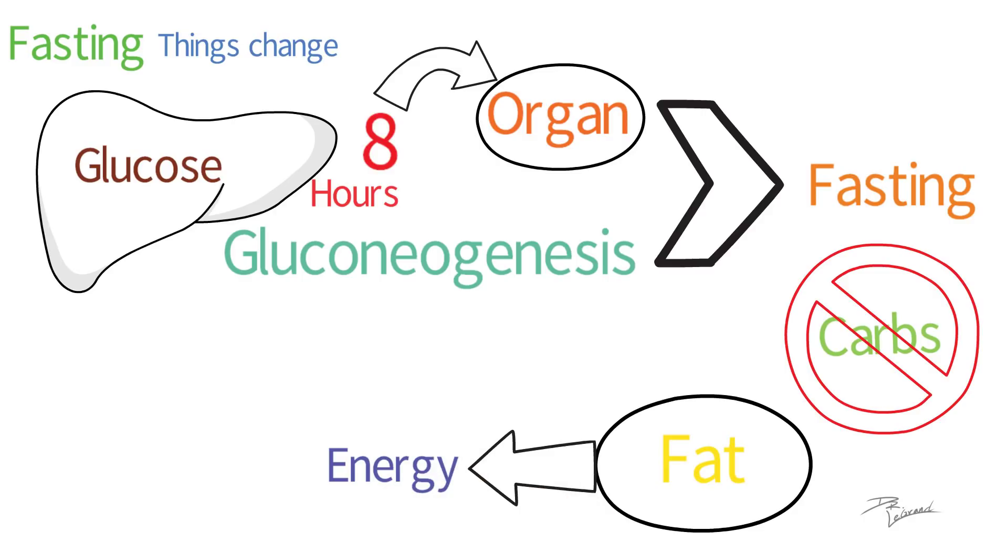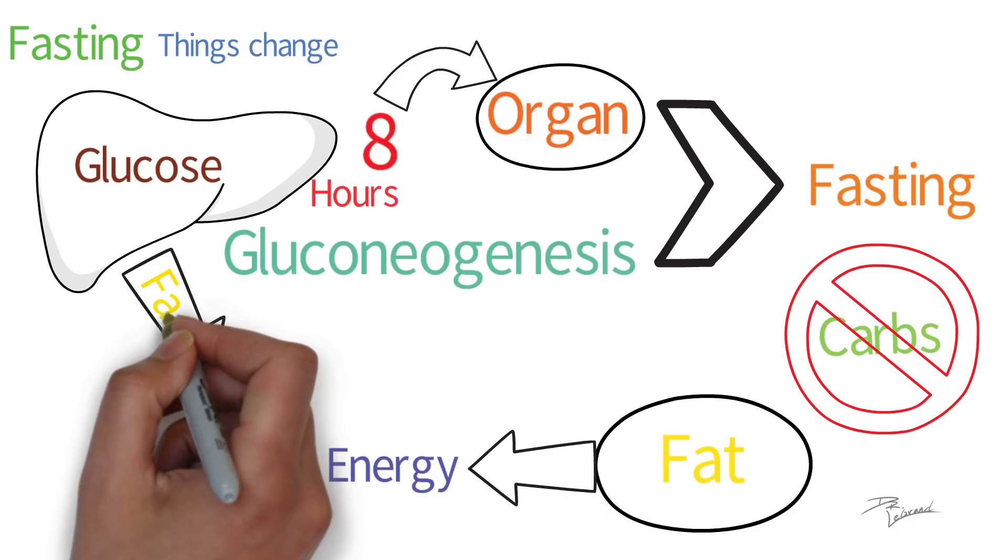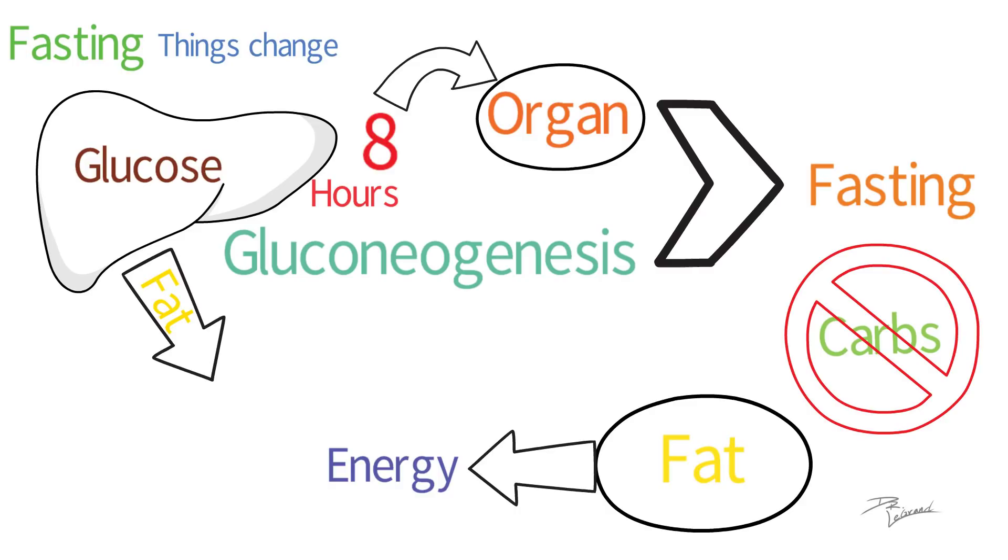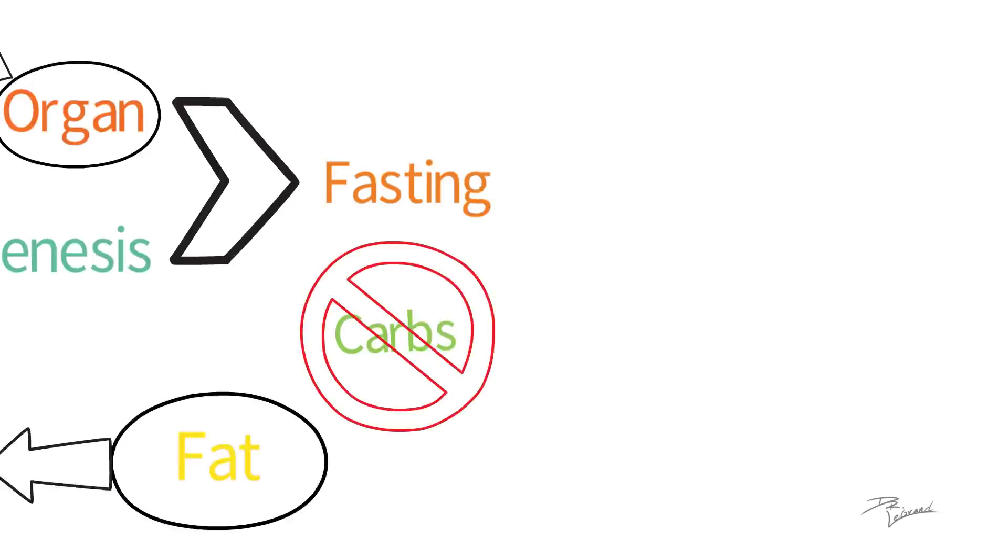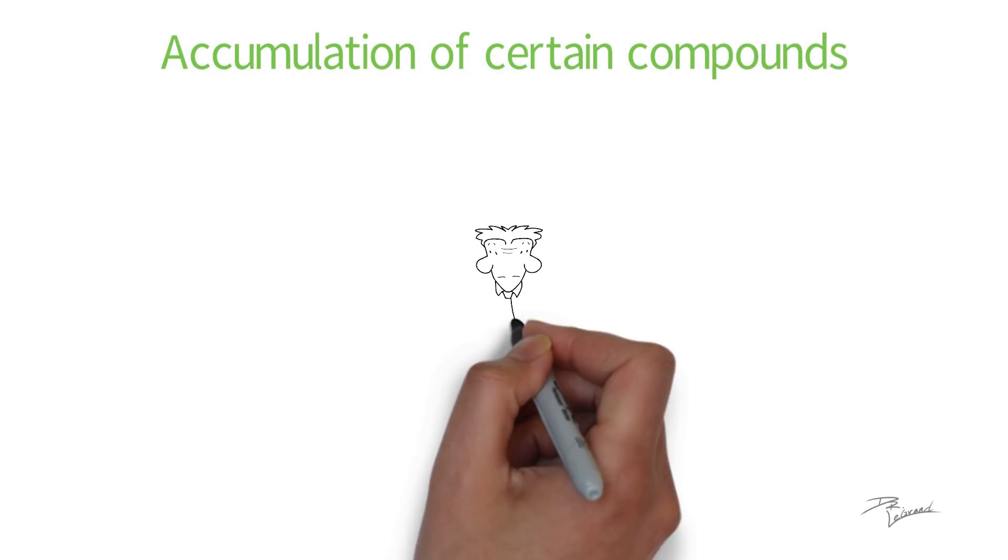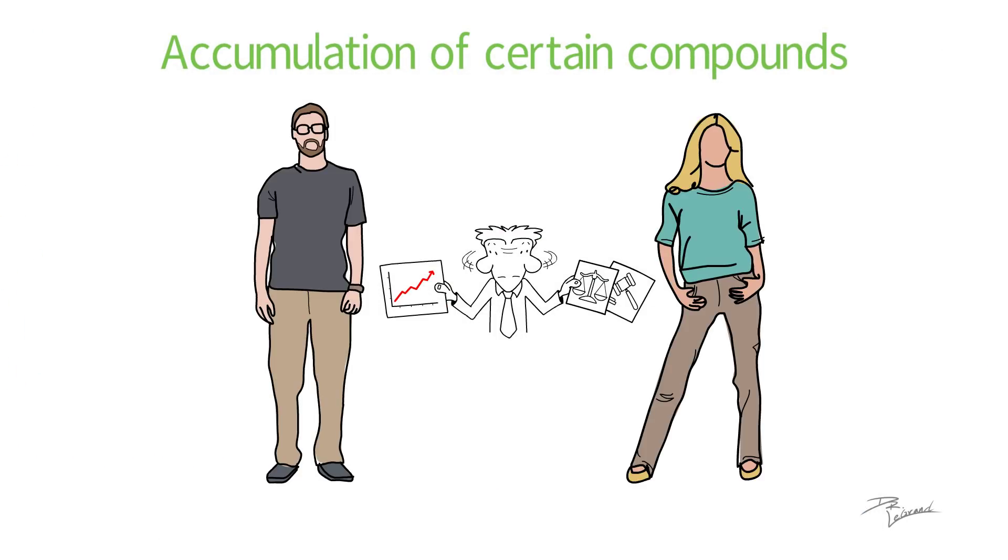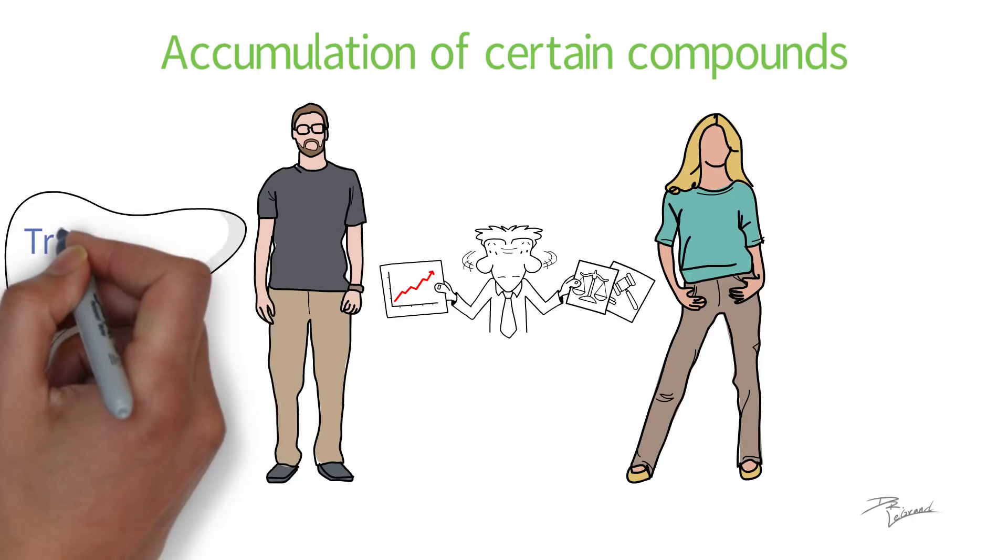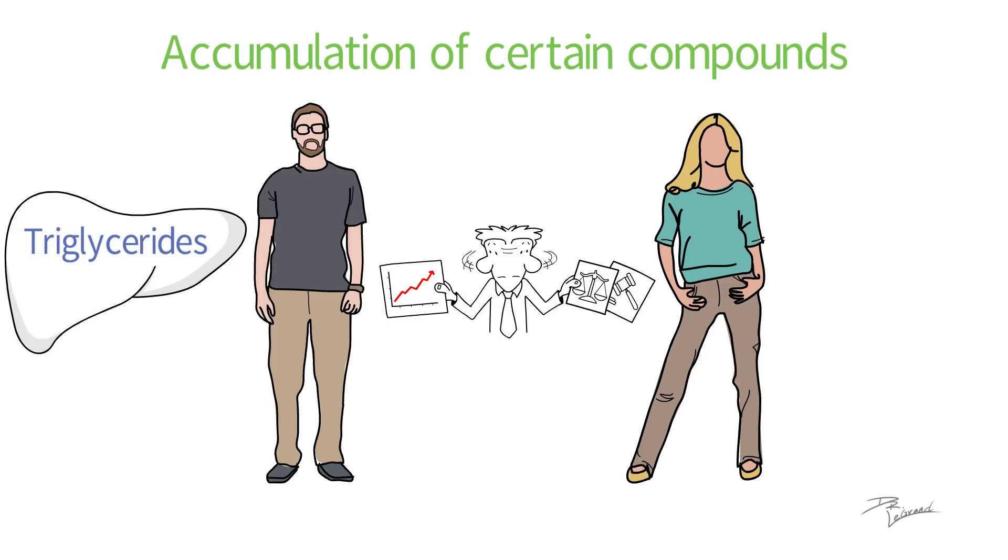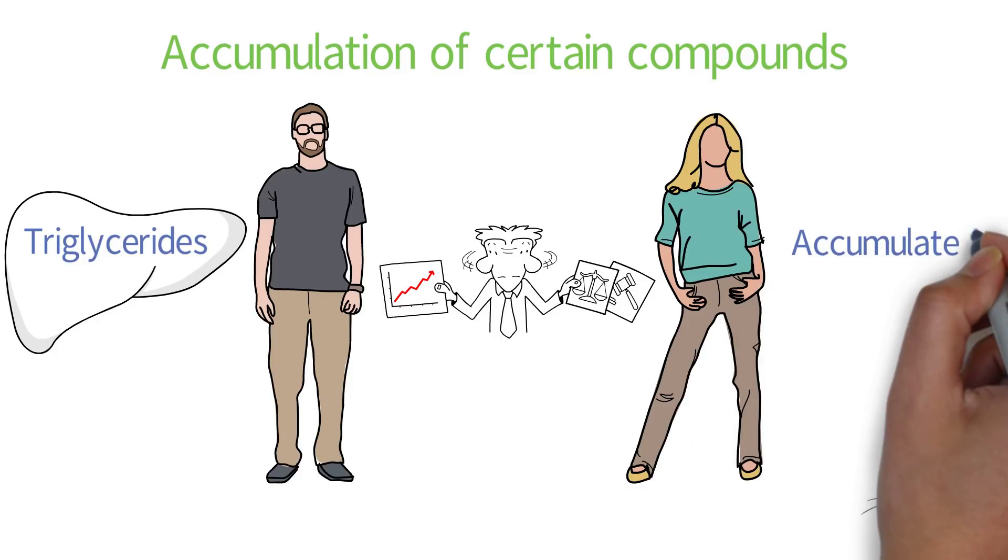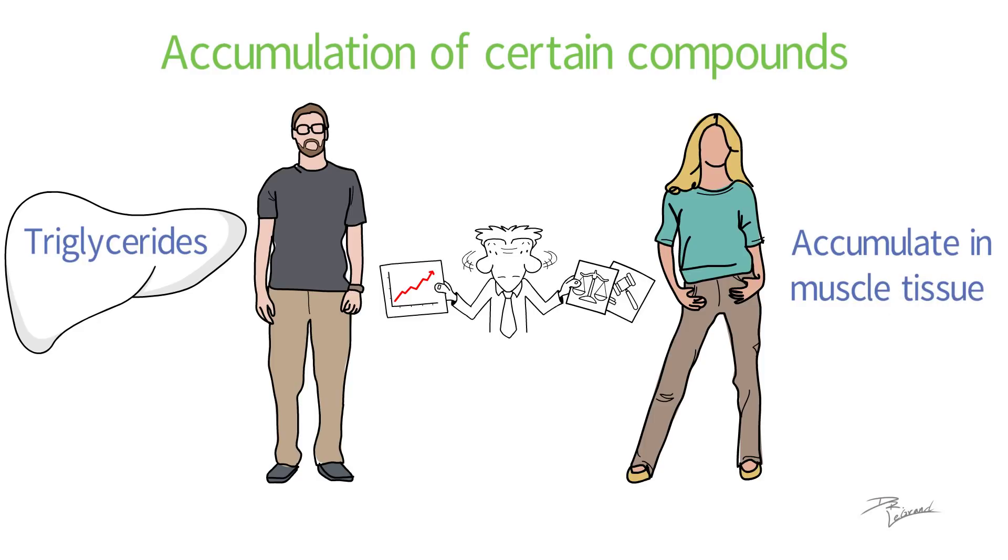One study found that the accumulation of certain compounds is different in men and women. When men fast, triglycerides seem to collect in their liver. The same is not true for the female body, as triglycerides rather tend to accumulate in muscle tissue among women when they are fasting.